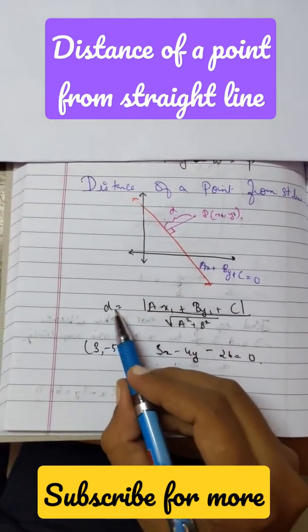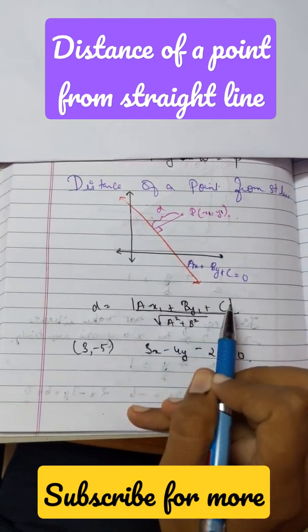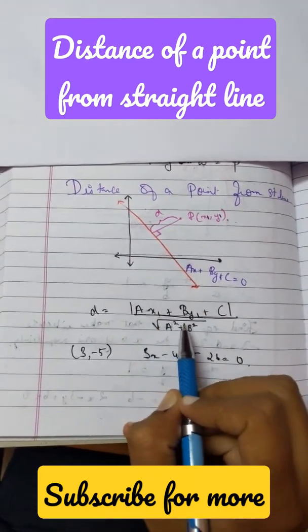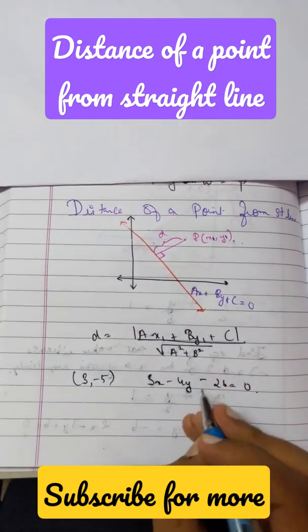The formula for this is given as ax1 plus by1 plus c divided by root over a square plus b square. So let's solve this using an example.